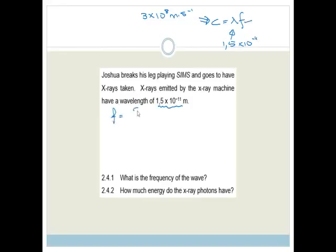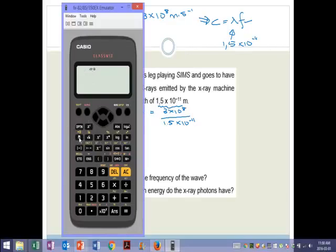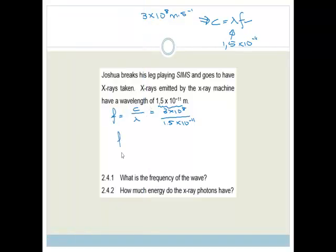Therefore we can say frequency is equal to C over wavelength, which is 3 times by 10 to the 8 over 1.5 times 10 to the minus 11. Now we need to get out our calculator. We've got 3 exponent 8 divided by 1.5 exponent of negative 11. And it equals 2 exponent 19. So the answer is frequency is 2 times by 10 to the 19. And remember you always have to put your units in. Frequency is measured in hertz.